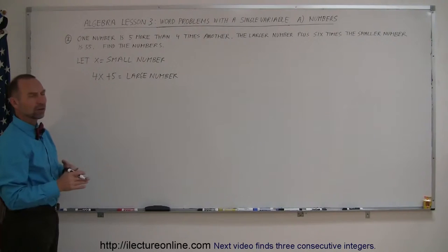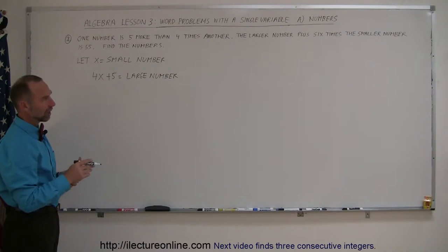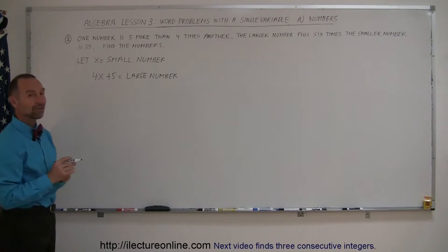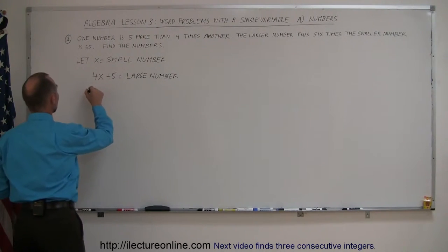So now to figure out what the numbers are, they give us more information. They tell us that the larger number plus six times the smaller number is 55. A good way to do that is to write it out in English.